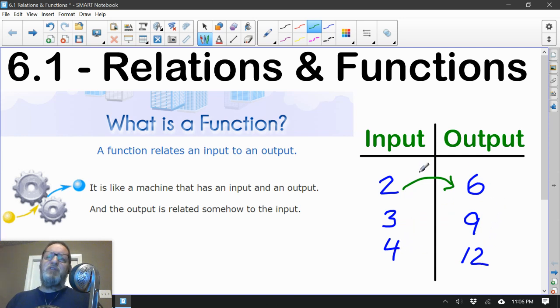At first, you might think, what about plus 4? 2 plus 4 is 6, but 3 plus 4 is not 9, and 4 plus 4 is not 12. So that's not it. Did you see what the actual rule is? Hopefully by now you figured out it was times 3. 2 times 3 is 6, 3 times 3 is 9, and 4 times 3 is 12.